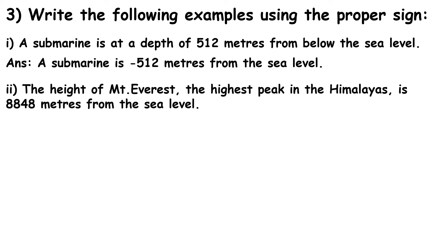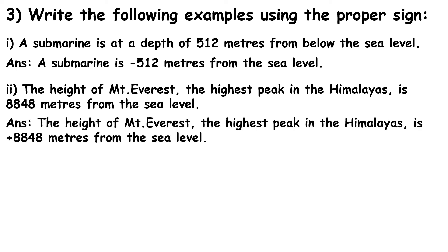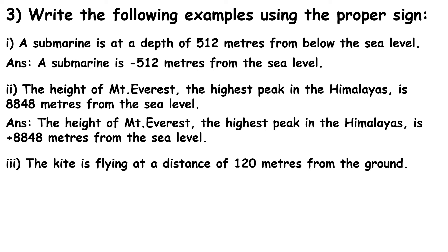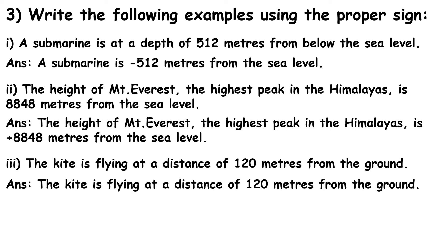The second question — the height of Mount Everest, the highest peak in the Himalayas, is 8848 meters from sea level. Since it is above sea level, the plus sign is used: plus 8848 meters. The last example — a kite is flying at a distance of 120 meters from the ground, so it is represented as plus 120 meters from the ground.